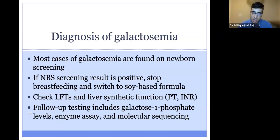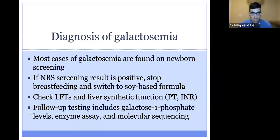Galactosemia is usually diagnosed on newborn screening. If you have a positive result, it's very important to stop breastfeeding or bottle feeding and switch immediately to a soy-based formula. You also want to check labs, including liver function tests and liver synthetic function — PT and INR reflect coagulation ability, so check these to make sure the liver is okay. To confirm the diagnosis, you can test galactose-1-phosphate levels, perform enzyme assays, or do molecular sequencing of the relevant genes.